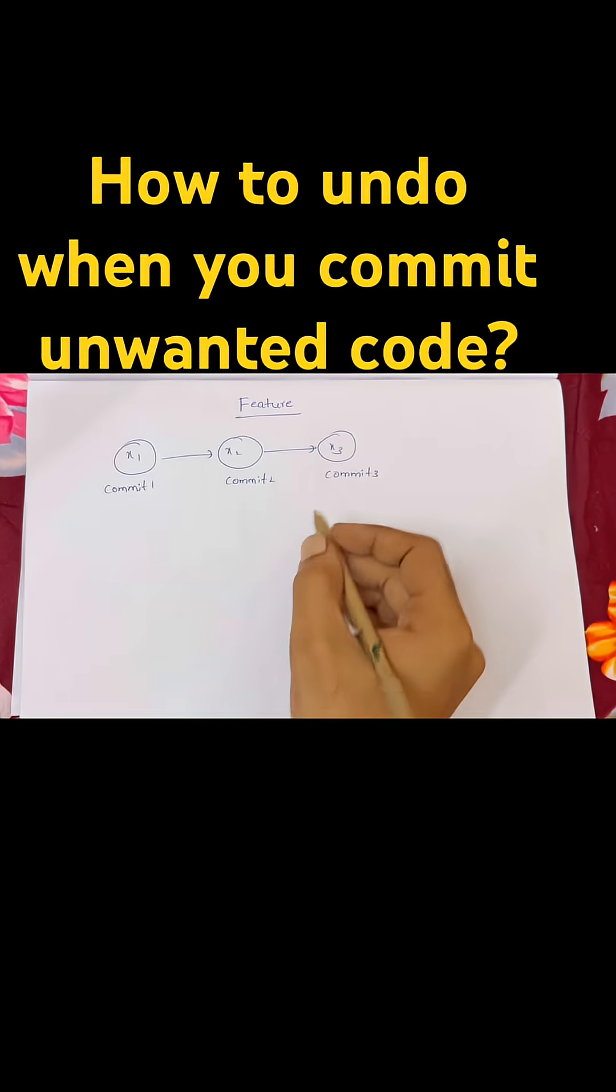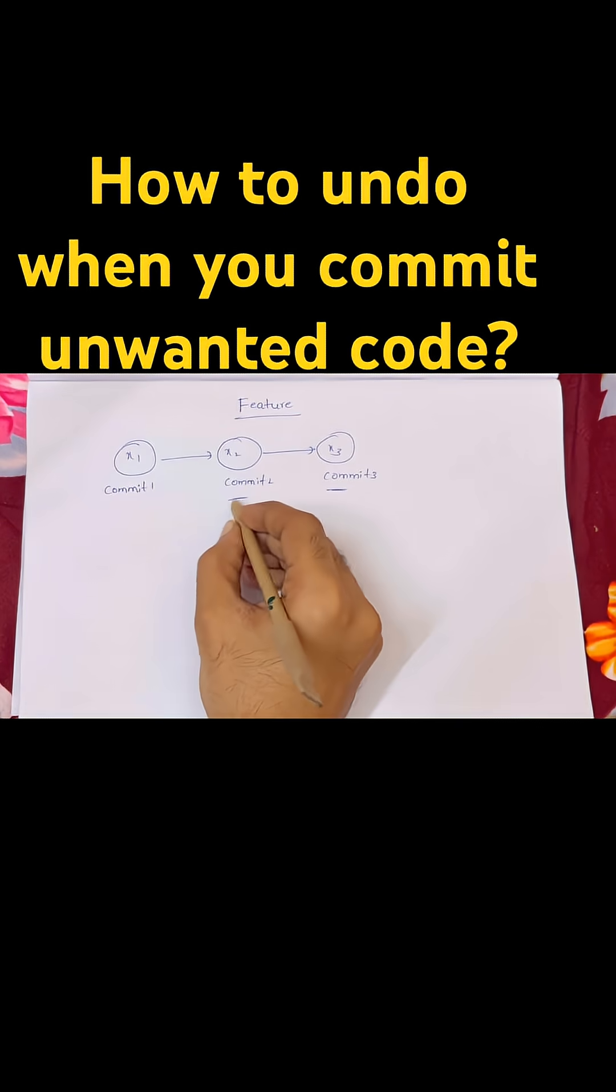When you are developing a feature, you face a situation where you feel that the git commits which you did are wrong and you want to go back to the previous commit.